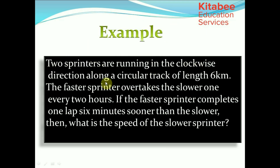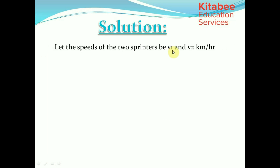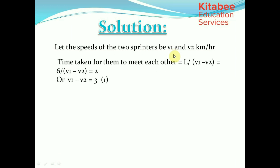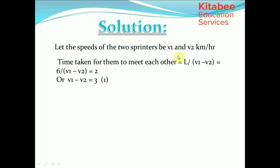Next example: Two sprinters run clockwise on a circular track of length 6 km. The faster sprinter overtakes the slower one every 2 hours, and completes 1 lap 6 minutes sooner. Find the speed of the slower sprinter. Let speeds be v1 and v2 km/h. Running in the same direction, time to meet is L/(v1 − v2). So 6/(v1 − v2) = 2, giving v1 − v2 = 3. This is equation 1.